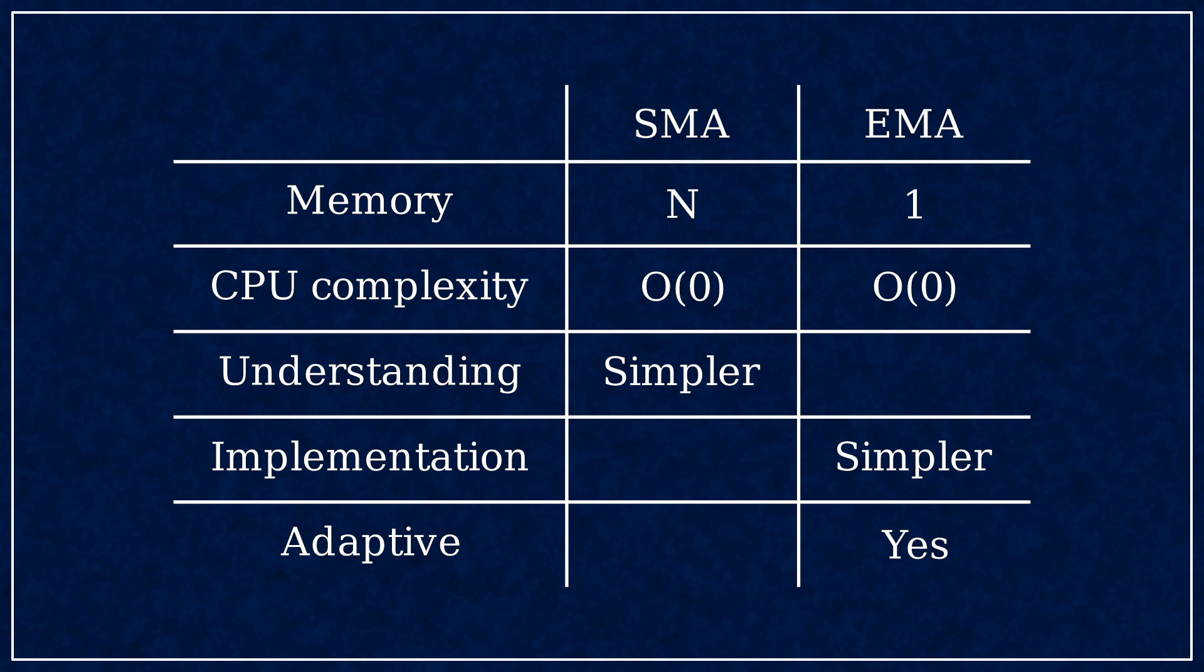Some other points to consider. The SMA needs N elements in memory, the EMA needs only one. As for CPU complexity, both are O(0). It's clear that the EMA execution does not depend on tau. The naive implementation of SMA scales with N, but with insert and update algorithm it can be independent of buffer size, so O(0).